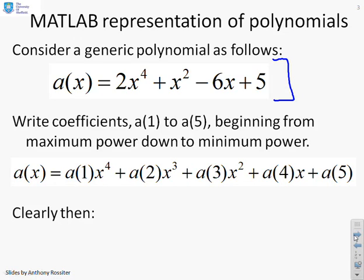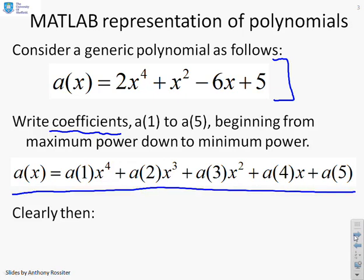You might be asking yourself, how will MATLAB represent this polynomial? Now, the most efficient way on MATLAB is it just stores the key polynomial information, which is the coefficients. The way it does it is it starts on the left with the coefficient of the maximum power and goes to the right with the coefficient of the minimum power. So you can see what I've written down here. I've said let a(x) equal a(1), that's the coefficient, times x^4, plus a(2)x^3 plus a(3)x^2 and so on.